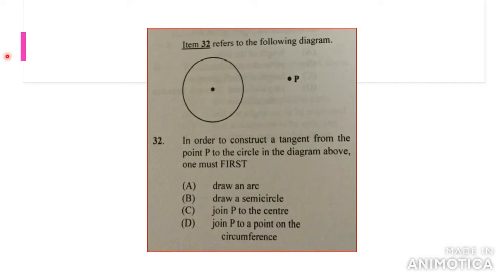In order to construct a tangent from the point P to the circle in the diagram above, point P is right here and you want to draw a tangent from point P to the circle. It would end up here or here because remember a tangent is a line barely touching or just touching the circumference of the circle. The first thing that you must do is draw a line from the center to point P. The answer would be C, joining P to the center.